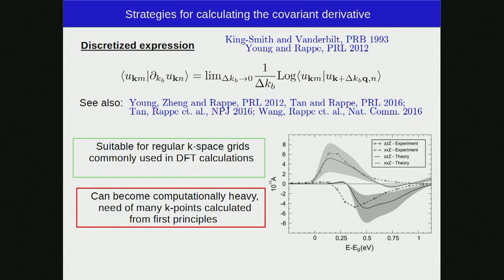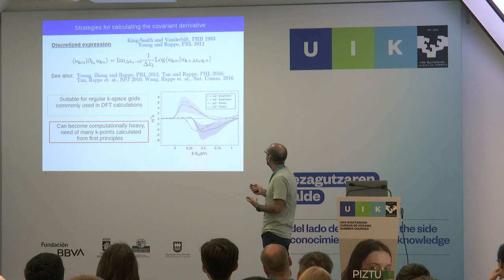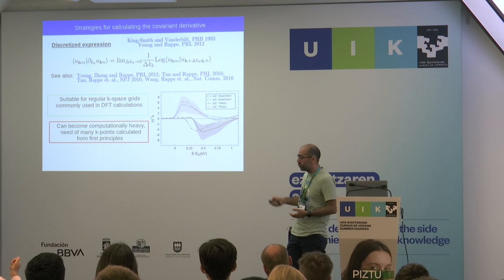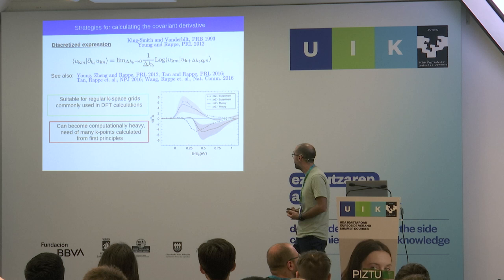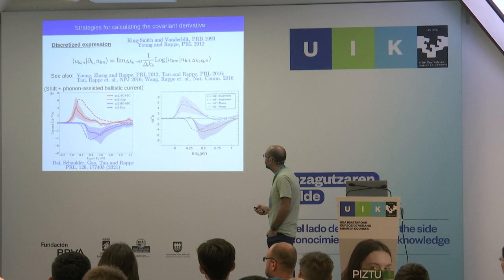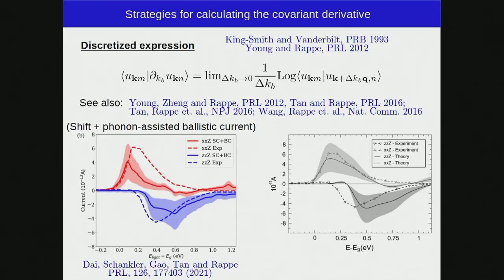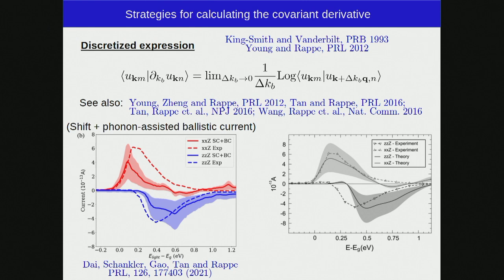The drawback of the discretized procedure is that you need to compute all k-points ab initio in a non-self-consistent way, which for certain materials with tough convergence can be very time-demanding. The same authors very recently came back to the problem and added a phonon-assisted ballistic current to the shift, including recombination processes due to electron-phonon interaction. This result tells us the order of magnitude we can expect for recombination processes due to phonons.